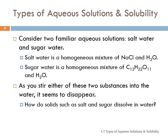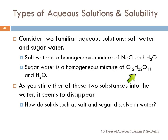Types of solutions. We're familiar with salt water and sugar water. Salt water is a homogeneous mixture of sodium chloride and water. Sugar water is a homogeneous mixture of sugar and water. You stir the substances in, they seem to disappear. What's going on? How do these things dissolve in water?